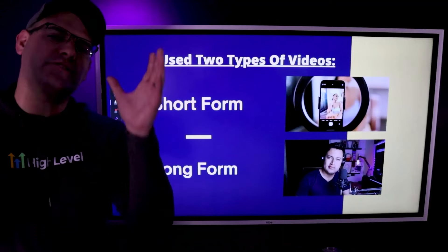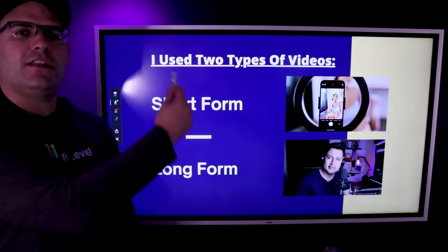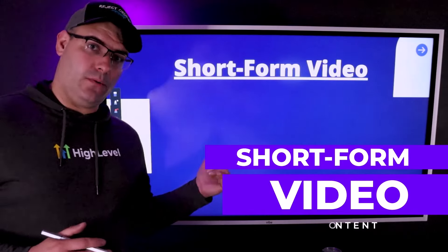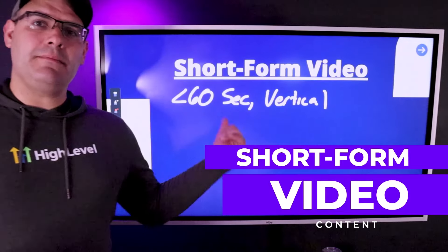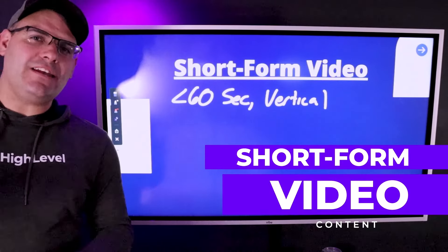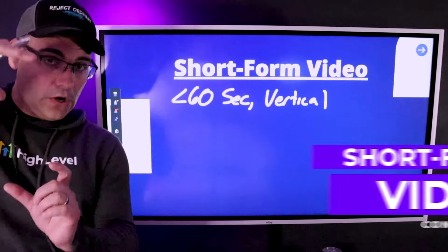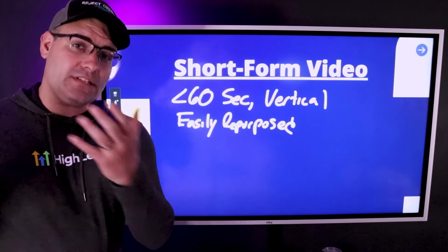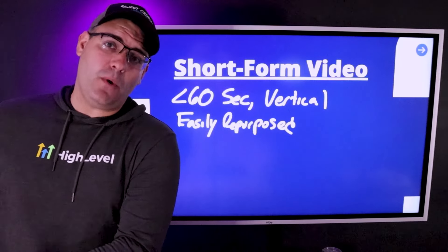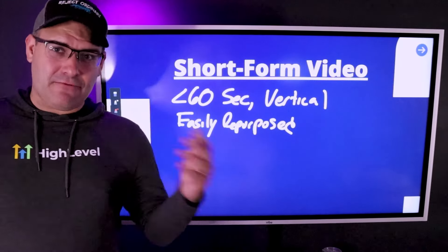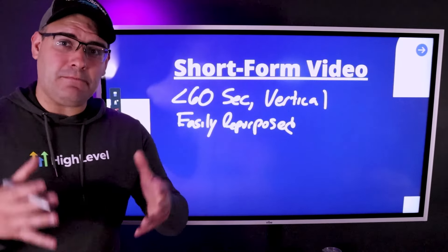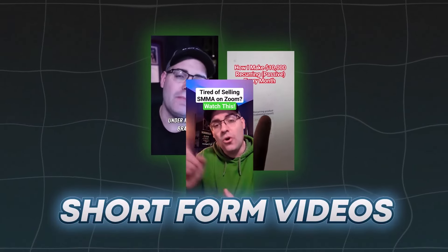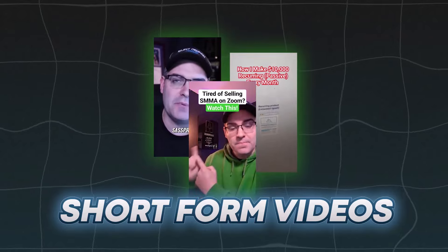We've got two types of video: short form and long form. Short form video is typically less than 60 seconds, shot in a vertical orientation on a phone, and easily repurposed across a number of platforms. Because of TikTok's popularity starting in 2020, pretty much every social platform has adopted short form video, so you can make one short vertical video and place it on about a dozen platforms.